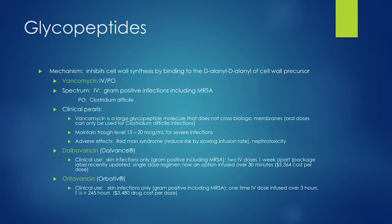You want to maintain trough levels of vancomycin around 15–20 mcg/mL for more severe infections. This is a development from the past 10 years targeting higher trough levels due to MIC creep — MRSA becoming more resistant. For cellulitis, trough levels of 10–15 may suffice because it distributes well in skin and soft tissue. For pneumonia, vancomycin only distributes about 50% relative to serum in lung tissue, so you need high doses and trough levels of 15–20.